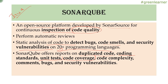SonarQube can make your code coverage report more readable and analytical. It can maintain the history of code coverage over time, showing how your coverage is improving. It also reports on code complexity — for example, if a method has nested loops and complex business logic, it can suggest that it's too complex and not maintainable. It gives a complexity parameter and alarms you when that threshold is exceeded. It can also review comments, bugs, and security vulnerabilities.